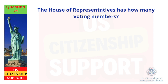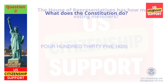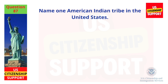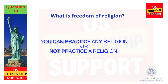The House of Representatives has how many voting members? Four hundred thirty-five. What does the Constitution do? Sets up the government. Name one American Indian tribe in the United States. Cherokee. What is freedom of religion? You can practice any religion or not practice a religion.